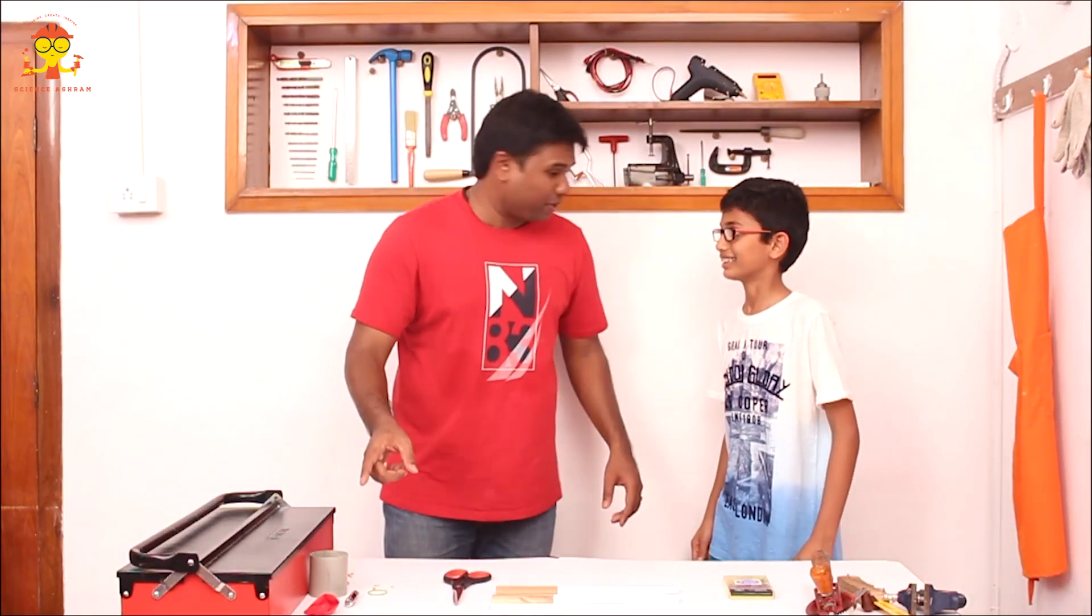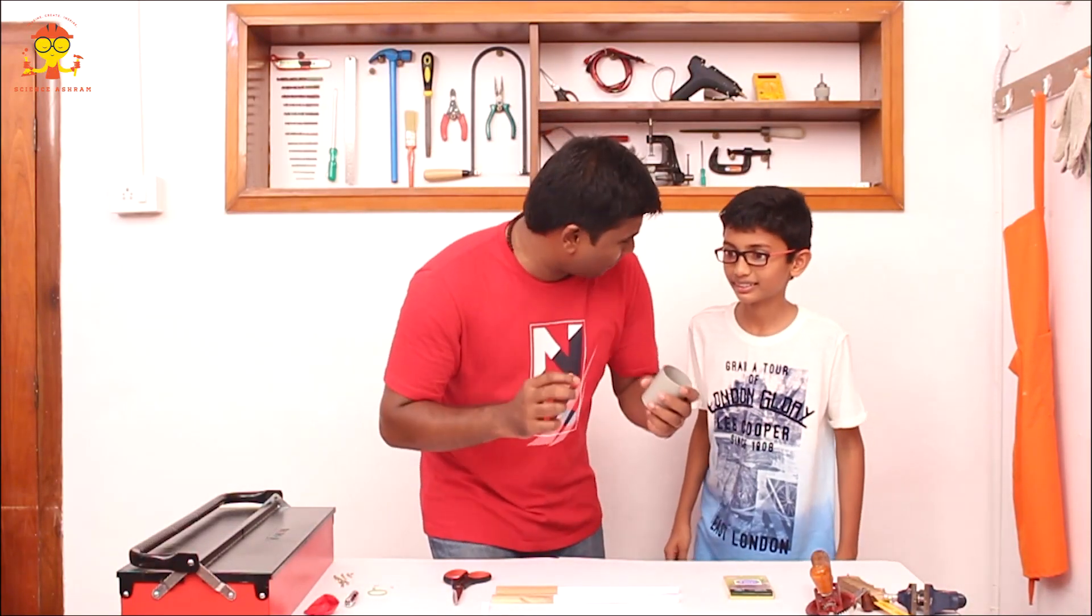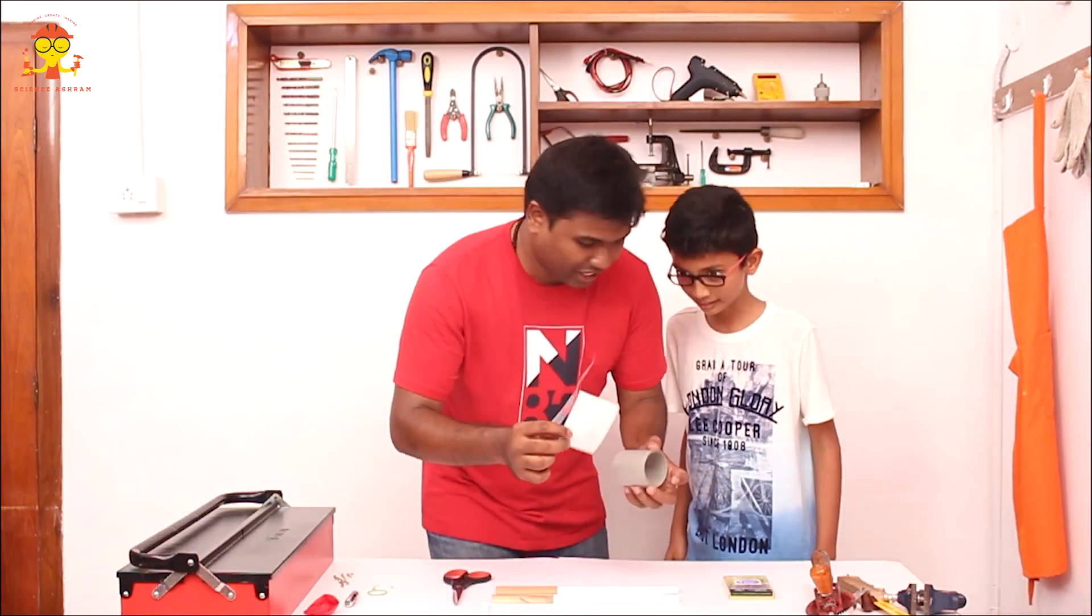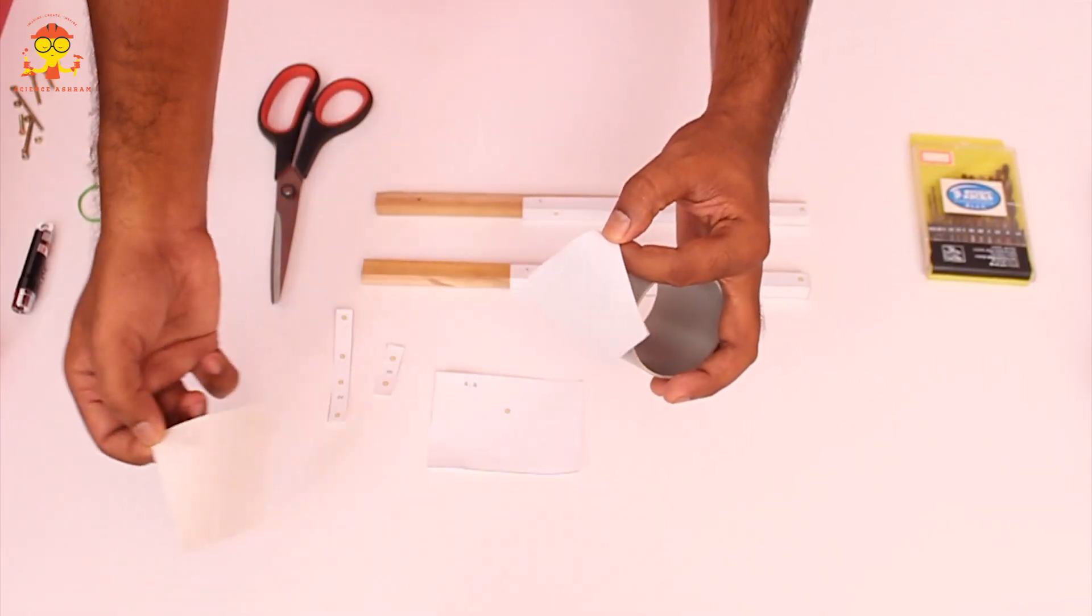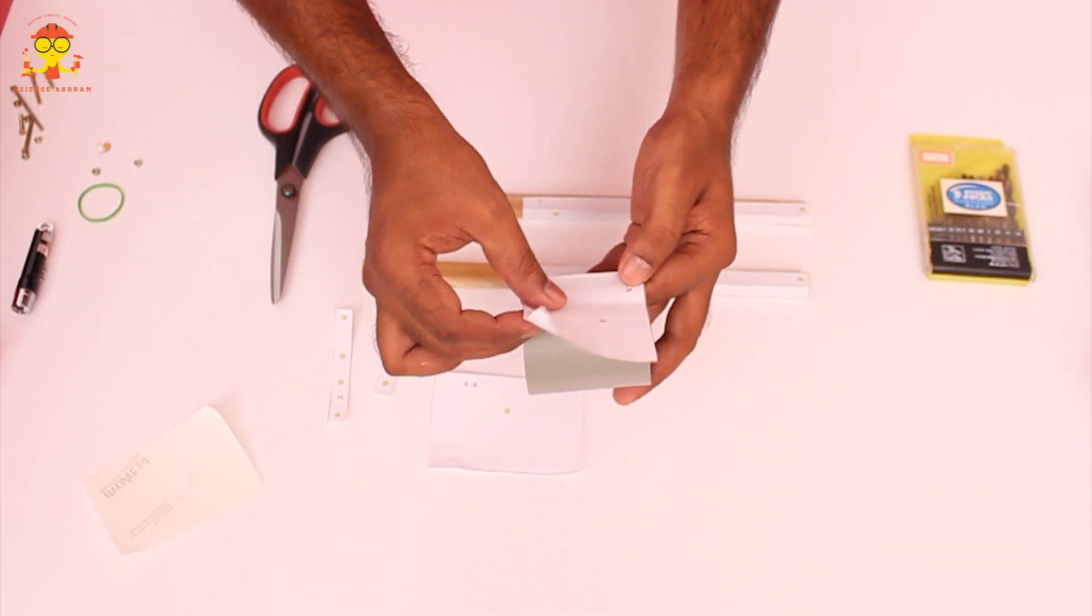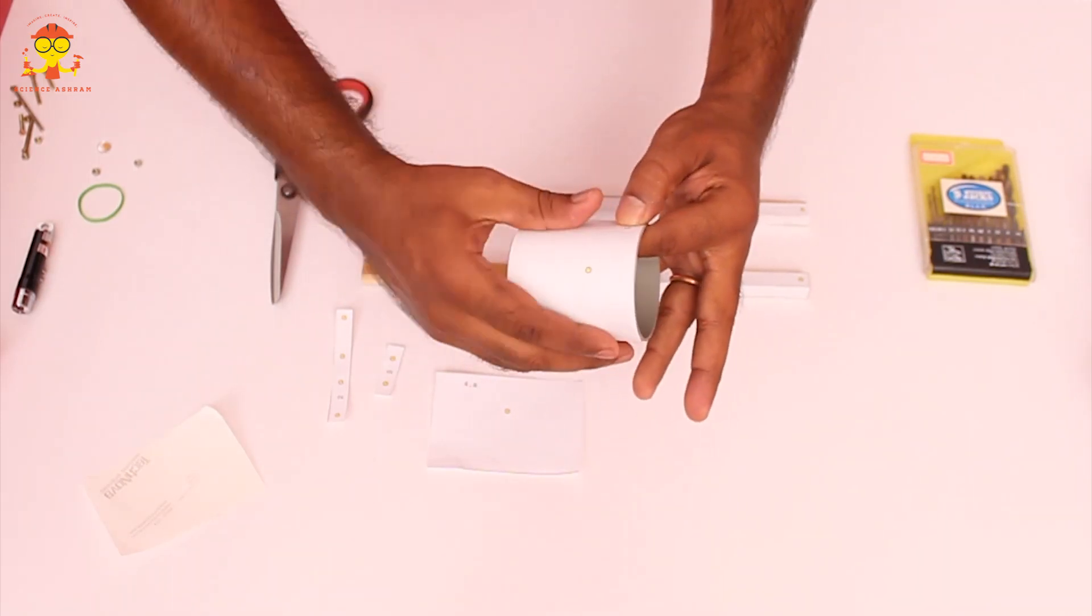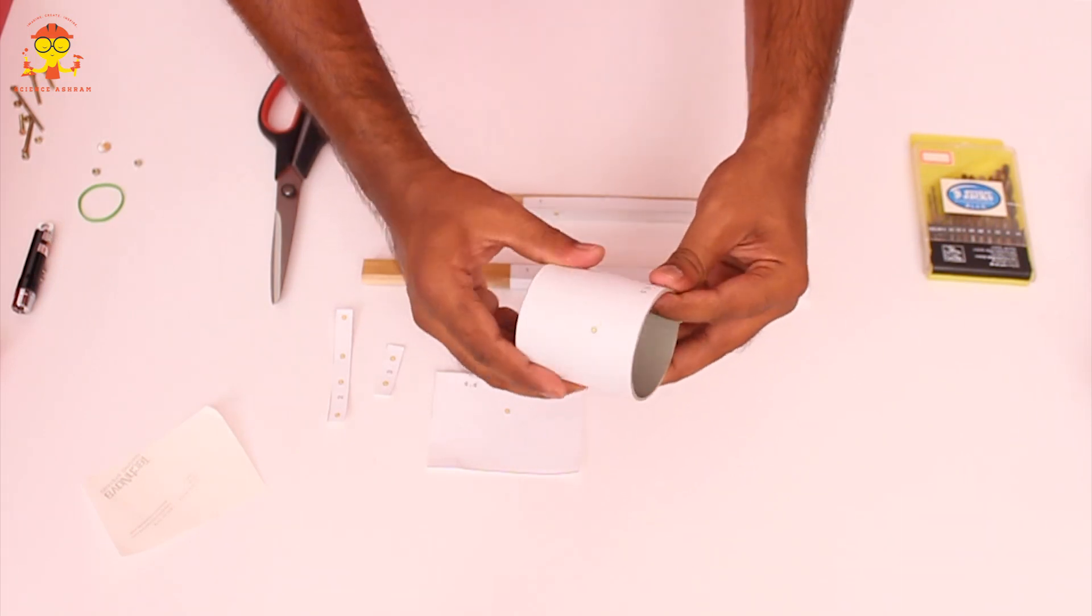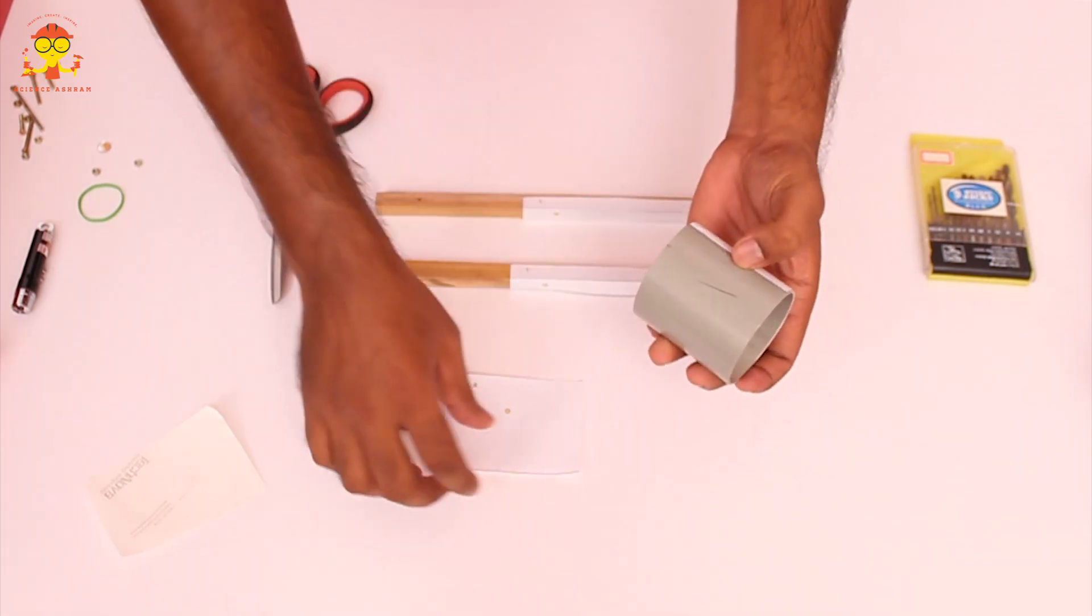Alright! We need to do the same thing to the PVC pipe. Yeah! We need to take the PVC pipe, the design sheet, peel the sticker off and stick it around the PVC pipe like this. Same thing the other side.